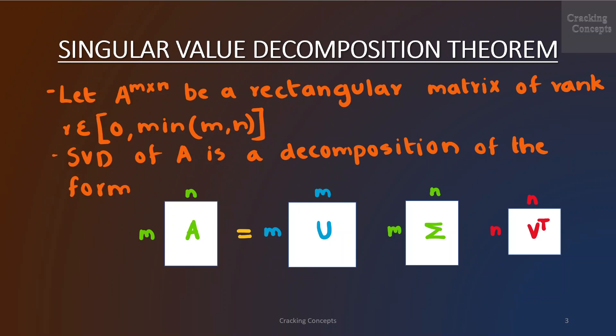Let A be an m×n rectangular matrix of rank R which is an element of zero to minimum of m or n. Then the SVD of A is a decomposition of the form: A, which is a matrix of size m×n, can be written as matrix U of size m×m, Sigma of size m×n, and V transpose of size n×n.